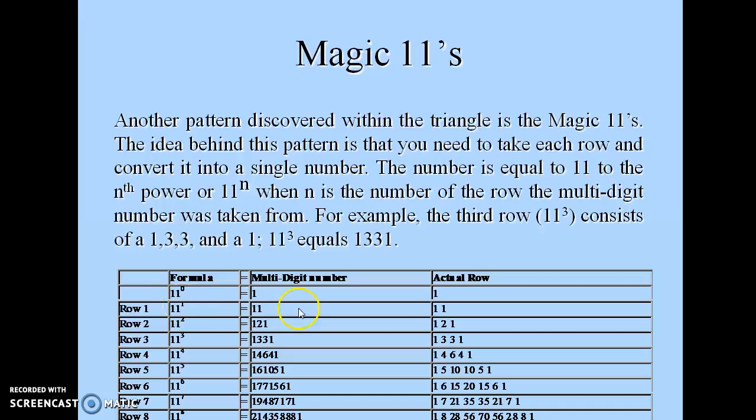That is 1, 1, which forms the first row of Pascal's Triangle. If it is about 11 squared, it gives you 1, 2, 1, which forms the second row of Pascal's Triangle. The same for 11 to the power 3 and 11 to the power 4.